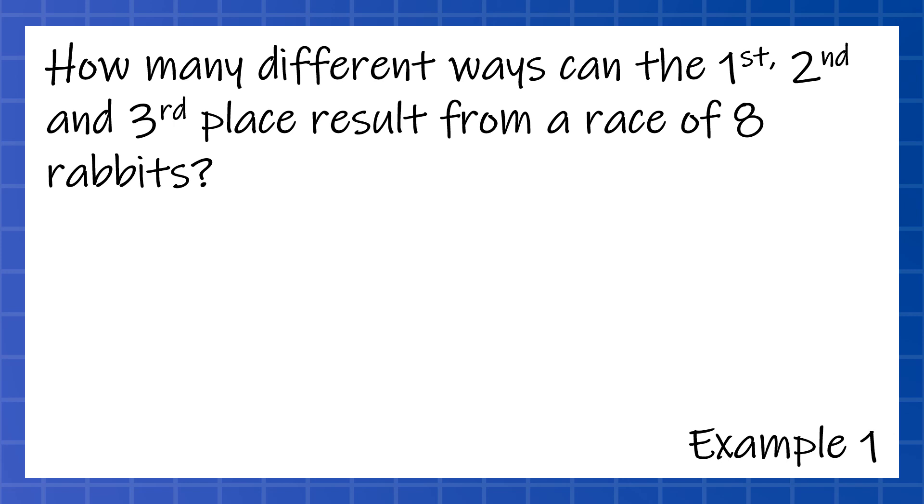So the first example, how many different ways can the first, second, and third place result from a race of eight rabbits? You're doing a race of rabbits. There's eight contestants. And so this is going to be, there's a bunch of different possibilities. And that's really what permutations and combinations are about. How many different possibilities? But this one talks about possibilities, and it has an order that matters.